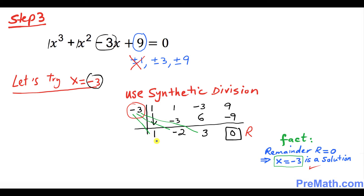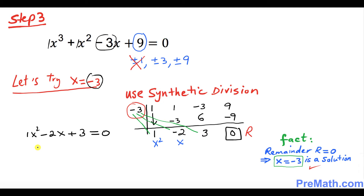Now let's focus on the remaining numbers from the synthetic division. We can write them as x² - 2x + 3 = 0. This is our quadratic equation, and we want to solve it using the quadratic formula.